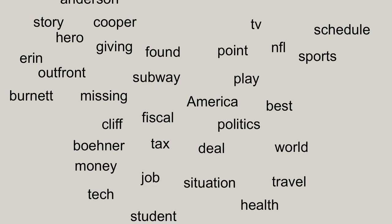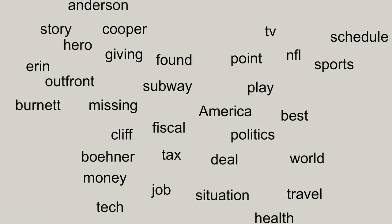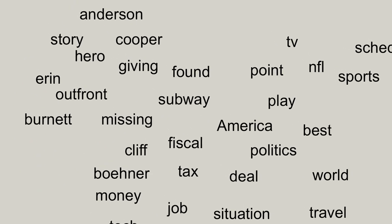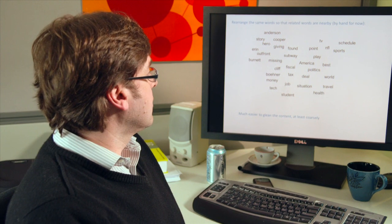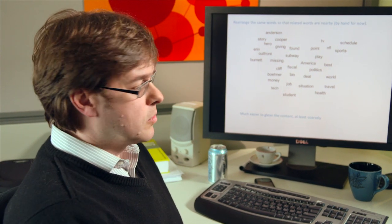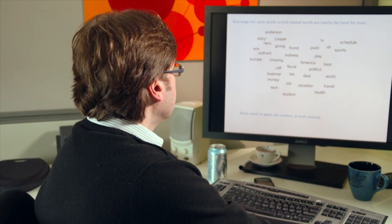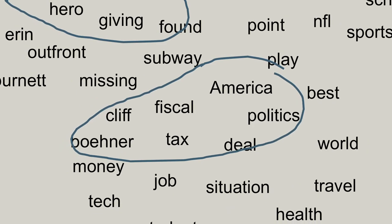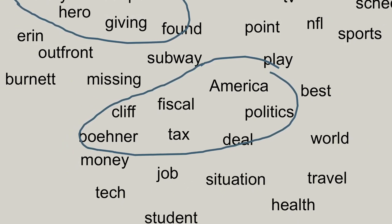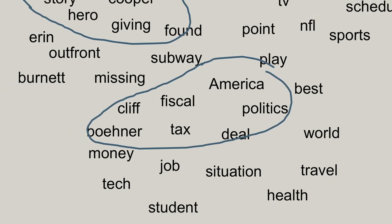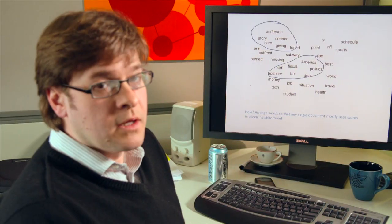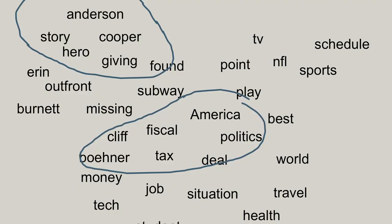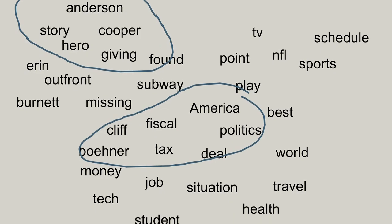If we arrange the same sort of words in a spatial arrangement like here, so that related words are found nearby, then the whole map is much more easy to consume. You can find, for example, words like 'cliff' and 'fiscal' next to each other. The way this is arranged is so that in any local neighborhood you look at, the words that you find there tend to correspond to the set of words you would find in a single news story.